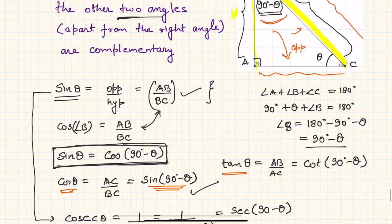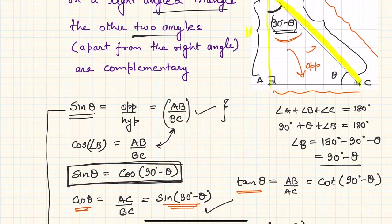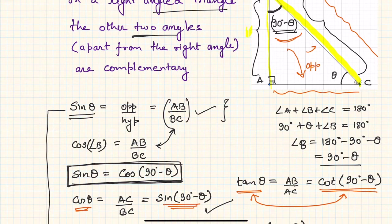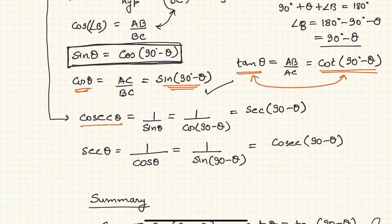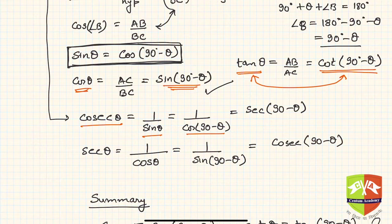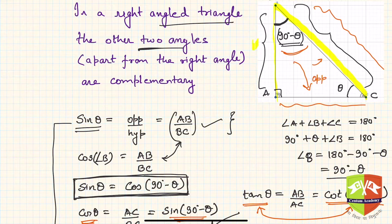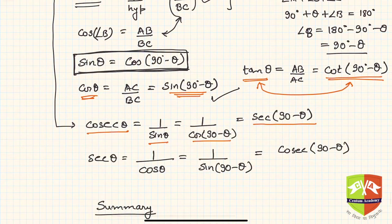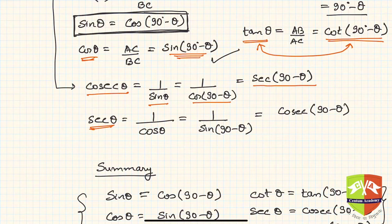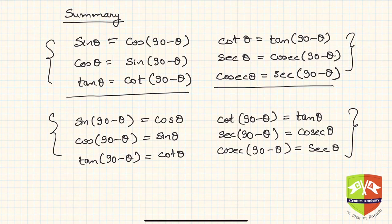Tan theta is opposite over adjacent, which is AB over AC, and this equals cot(90 minus theta) — so tan theta and cot(90 minus theta) are equal. For the reciprocal ratios: cosecant theta is 1 over sin theta, and since sin theta equals cos(90 minus theta), cosecant theta equals secant(90 minus theta). Likewise, secant theta equals cosecant(90 minus theta).